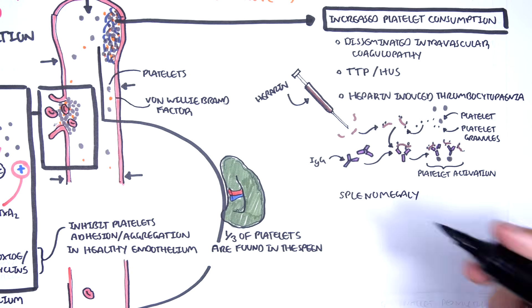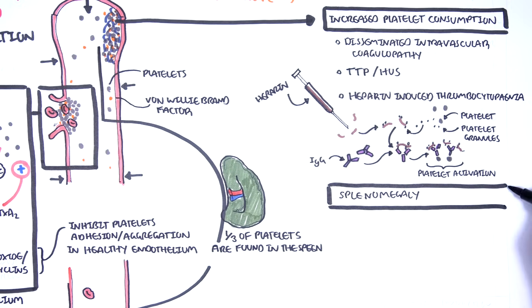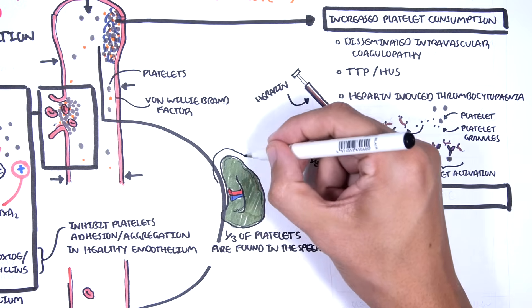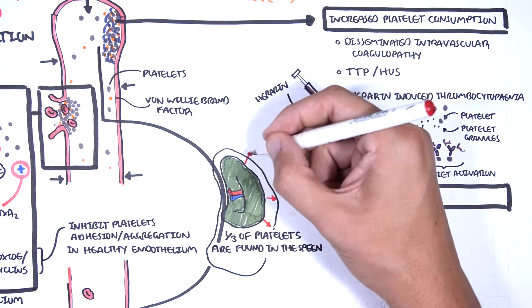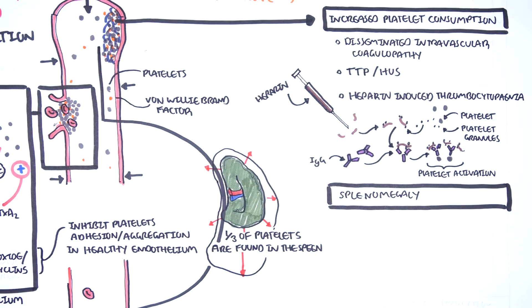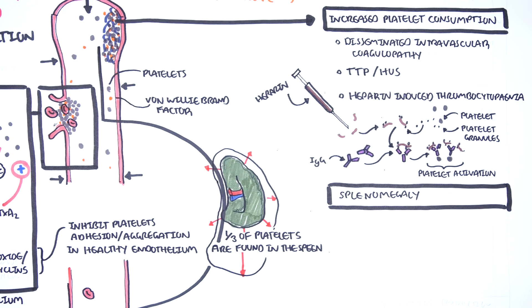Splenomegaly is another cause of thrombocytopenia. Approximately one-third of platelets are sequestered in the spleen to maintain normal circulating platelet numbers. Conditions that increase the spleen size, therefore, can reduce platelet numbers in circulation.